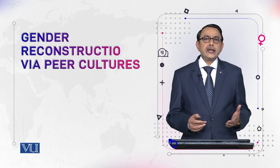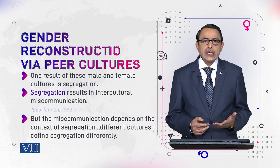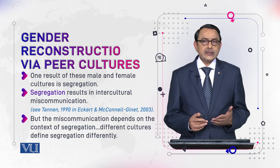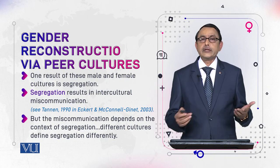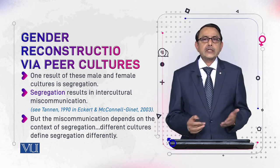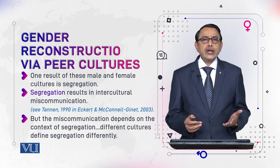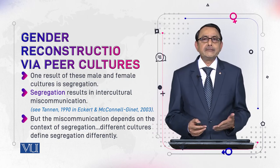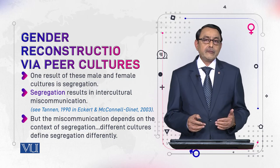One result of these male and female cultures is segregation — another term for separation. When we keep them apart from each other, the result is intercultural miscommunication. When people don't know each other's style of talk and norms, they misunderstand each other when they do communicate.